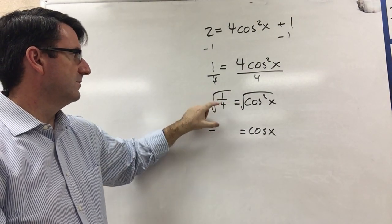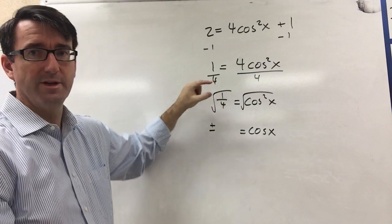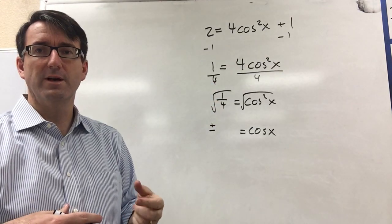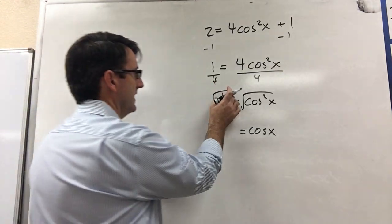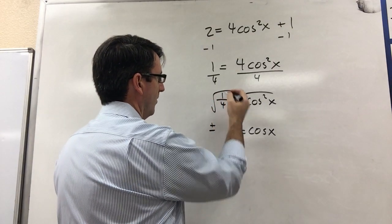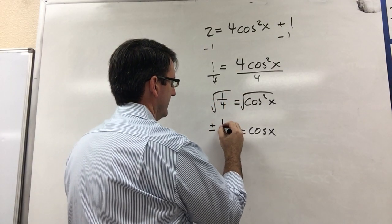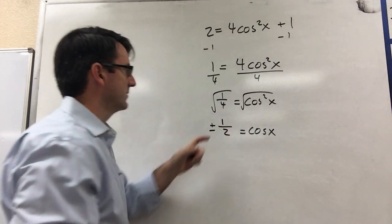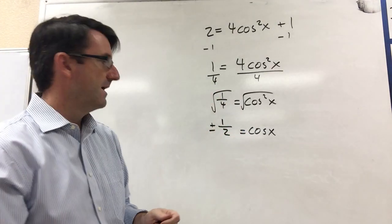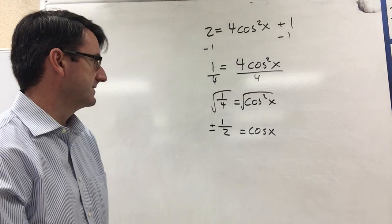And we can take the square root of the denominator and the square root of the numerator separately. So the square root of the numerator, the square root of 1 is 1, and the square root of 4 is 2. So the square root of 1 fourth is 1 half. And don't forget the plus or minus there.